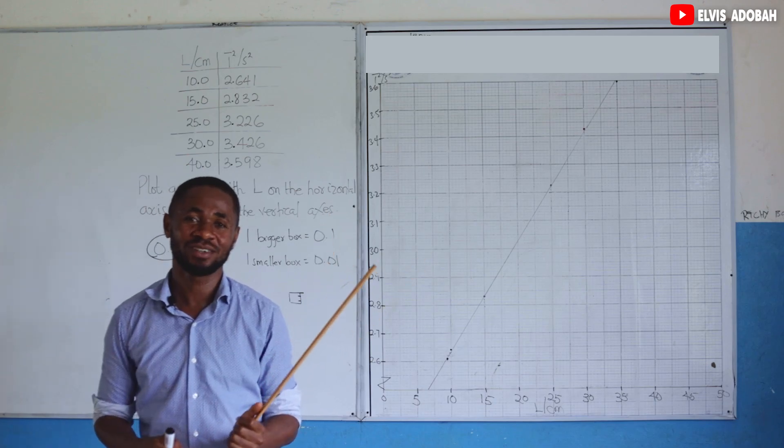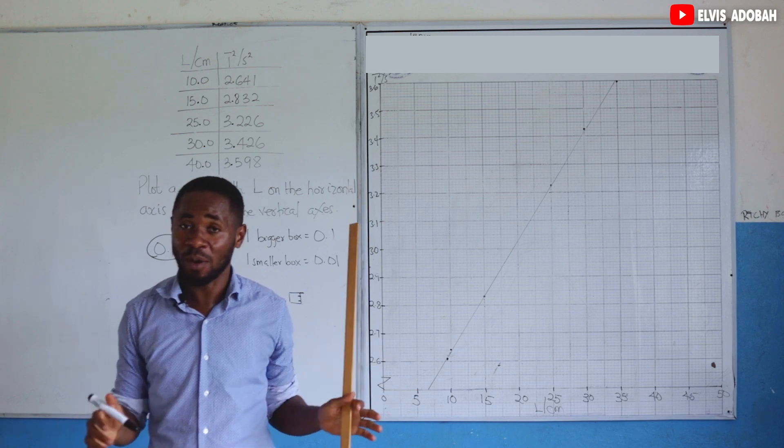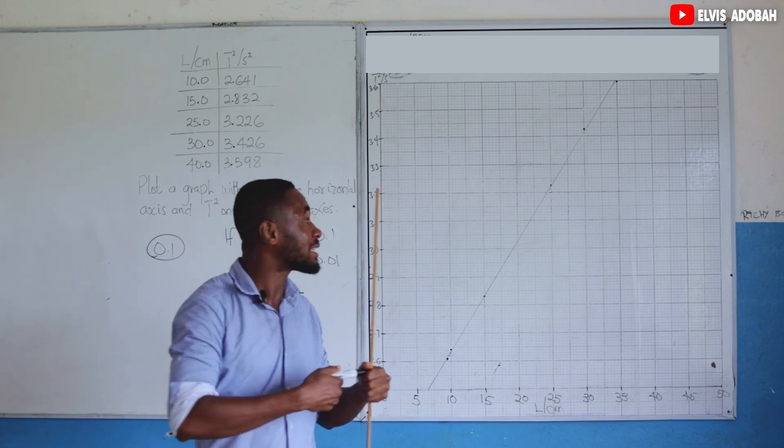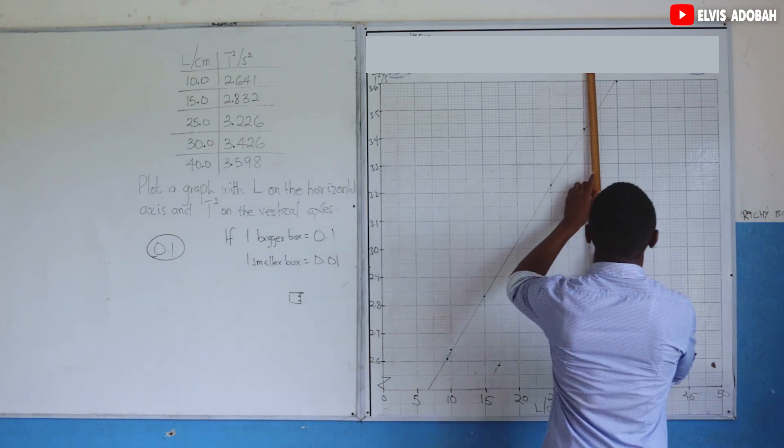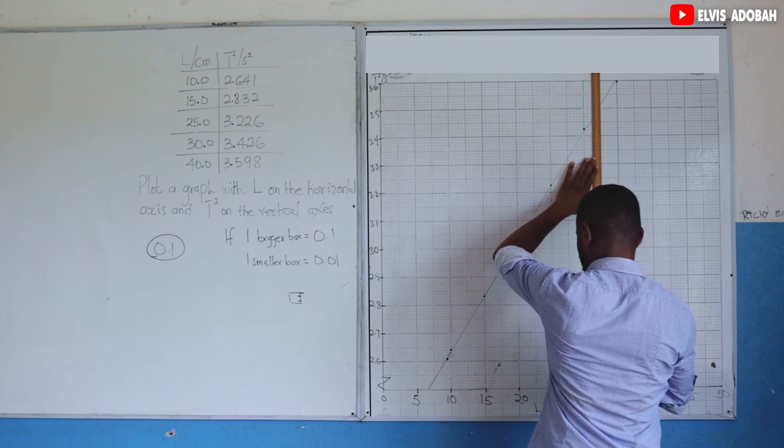Calculate the slope of the graph. It's not different from how you calculate slope, it's the same approach. You just draw a right angle triangle as big as possible.